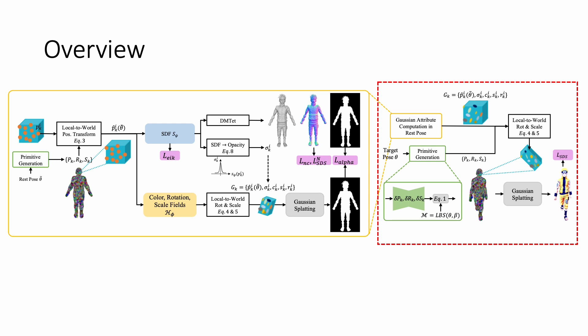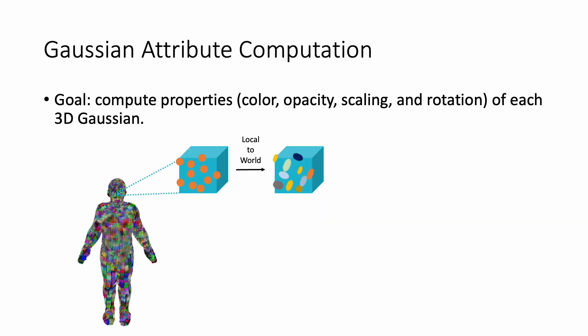We introduce each in detail next. For each 3D Gaussian, we compute its color, opacity, scaling and rotation by first mapping it from the local primitive coordinate system to the world coordinate system using the primitives transforms under the rest pose. We then query learnable neural implicit fields to obtain Gaussian attributes.